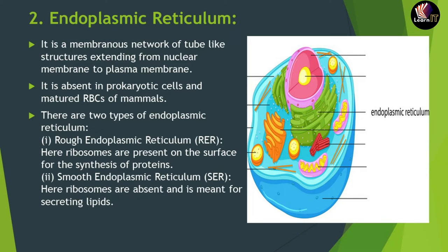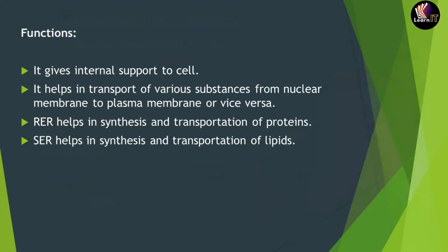Endoplasmic reticulum is of two types: RER (rough endoplasmic reticulum) and SER (smooth endoplasmic reticulum). If ribosomes are present on the endoplasmic reticulum, it is called rough endoplasmic reticulum; if ribosomes are absent, it is called smooth endoplasmic reticulum. RER helps in the synthesis of proteins, while SER helps in the secretion or formation of lipids.